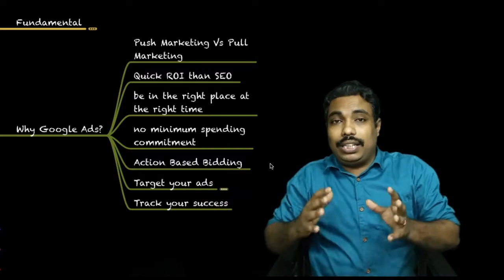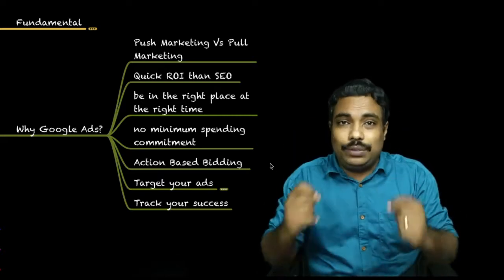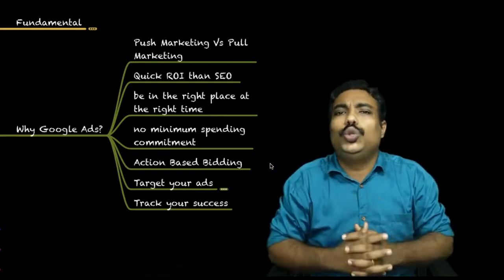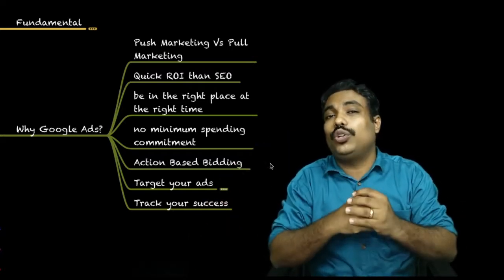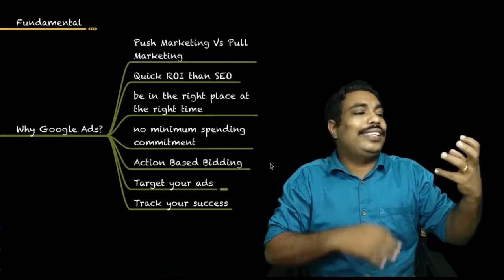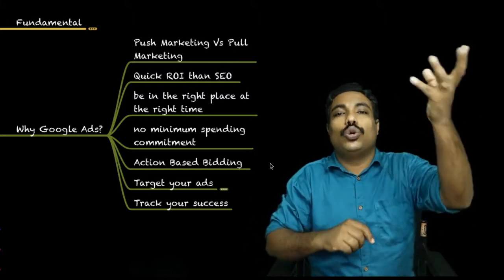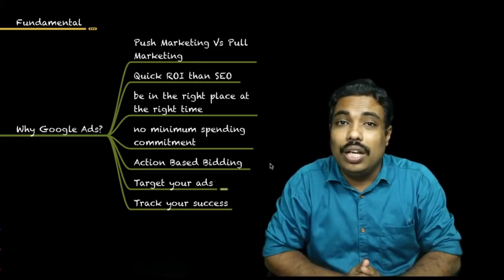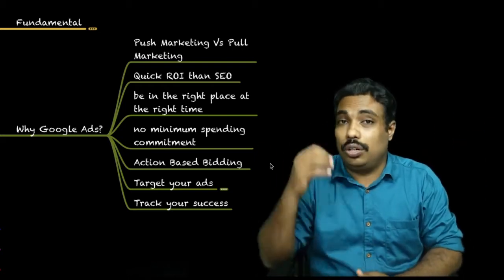In pull marketing, the customer is already looking for something. They are actually ready to buy — they just need to be pitched at the right time, right place, and right price. If you have a product and a person is searching for that product at the right time and price, they will buy. Google Search Ads and Shopping Ads are more into pull marketing, where a person goes and searches on Google and you show your product.